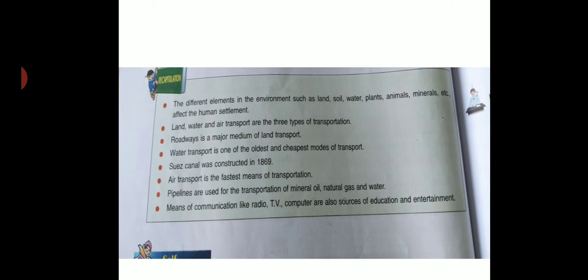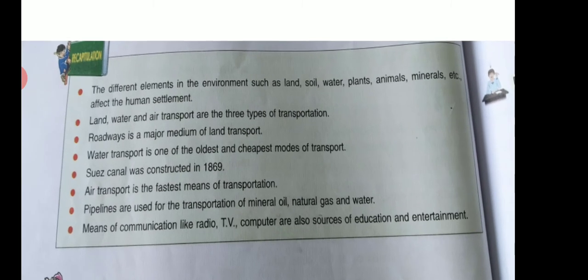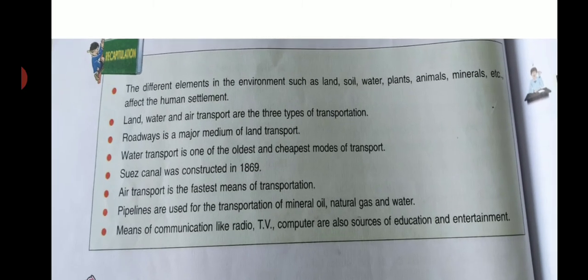We have reached the end of this chapter. To recap: key elements affecting the environment include land, soil, plants, animals, and minerals.